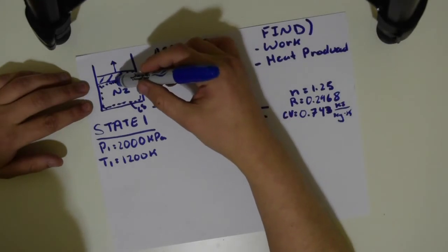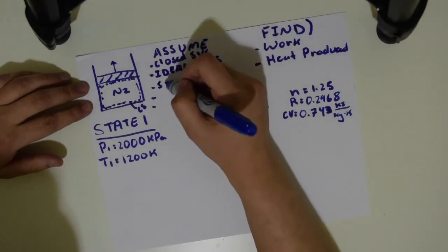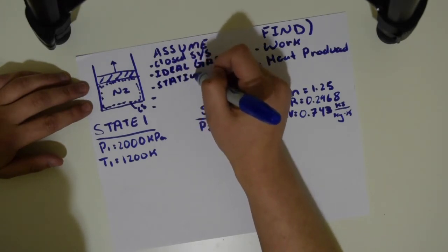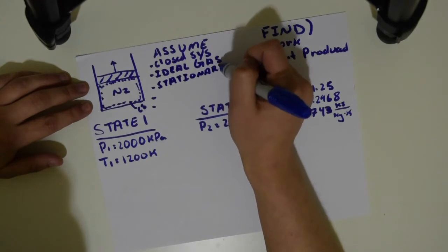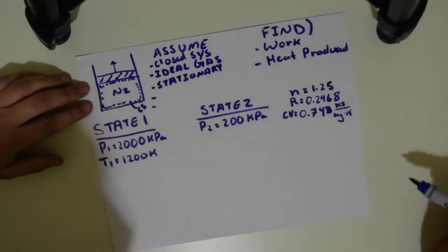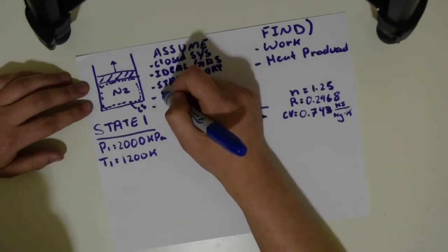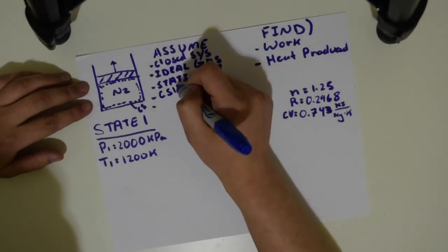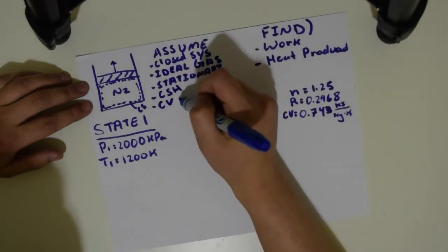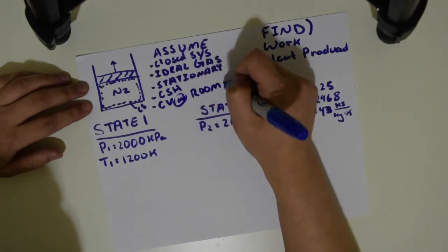We don't have any kinetic or potential energies — this is stationary. I'm using CV at room temperature, so I'm assuming two things: constant specific heat and CV at room temperature.